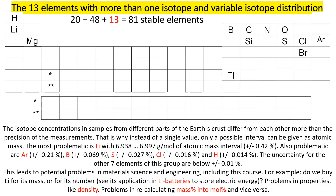Let me explain how different samples from different parts of the Earth's crust can have different isotopic concentrations. At the very beginning, billions of years ago, when the Earth was formed — the Earth is 4.5 billion years old — it was a fully liquid sphere because its temperature was so high. In that liquid sphere, the distribution of all elements and isotopes was homogeneous, since liquids are easily mixed. Then at a certain moment, a solid crust formed on the surface.